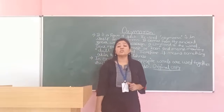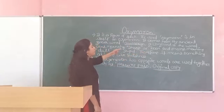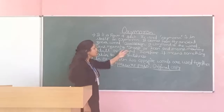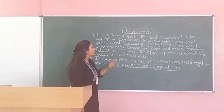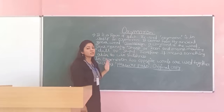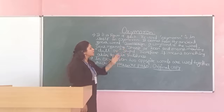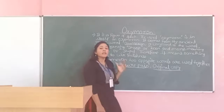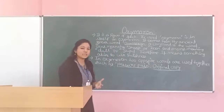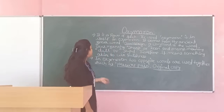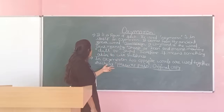Oxymoron is one word, which is itself an oxymoron. Because 'oxus' means sharp and keen, and 'moros' means dull or stupid. So sharp and dull are opposites, and keen and stupid are opposites. This word is used in literature so that poems can become more interesting, as oxymoron brings two opposite words together.